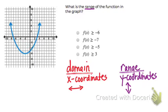The range is the y-coordinates. It's where the graph goes up and down, like the y-axis goes up and down.